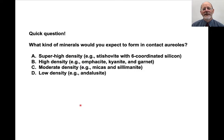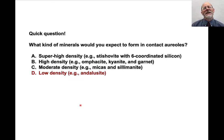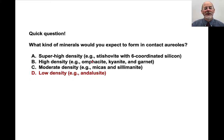What kinds of minerals would you expect to form in contact aureoles? The answer is low-density minerals. Contact aureoles typically have a large temperature gradient, forming where hot rocks intrude cold rocks. Cold rocks tend to occur closer to the surface, so they form at low pressure. High pressure stabilizes high-density minerals — stishovite is stable only deep in the mantle, and omphacite forms only at high pressure. Moderate density minerals form at moderate pressure. So it's really the low-density minerals that we would expect to form in contact aureoles.